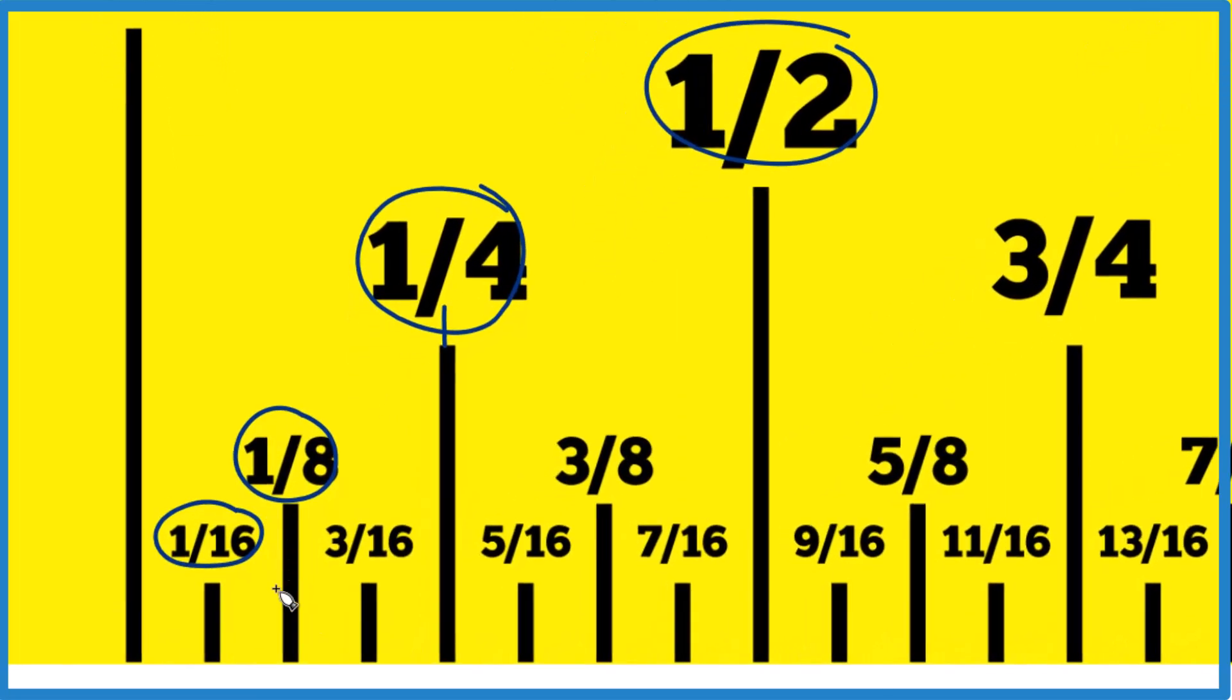But we want 1/32nd, so we're going to take half of that. So right there, we're going to split these into 32nds here. And we're looking for 3/32nds, so there's 1/32nd, 2/32nds, and 3/32nds. So right here, this is where we would find 3/32nds on our ruler or tape measure.